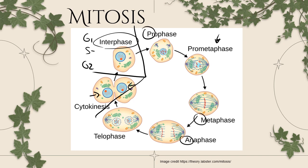Mitosis is PMAT. Prophase: we break down the nuclear membrane and condense our chromatin into chromosomes. Metaphase: spindle fiber proteins push and pull chromosomes to the equatorial plate in the middle of the cell. Anaphase: those same spindle fiber proteins rip chromosomes apart at the centromeres, pulling individual sister chromatids to opposite poles. Telophase: we uncoil the DNA back to chromatin and reform nuclear membranes. Then cytokinesis: the cell membrane pinches and we end up with two new daughter cells.